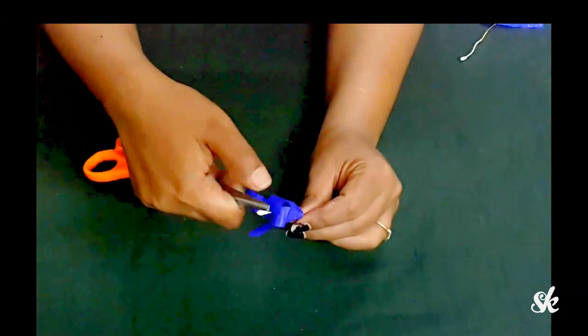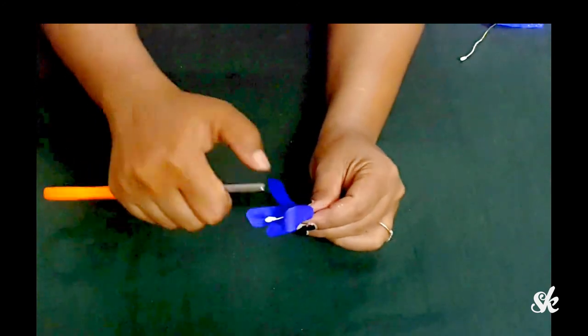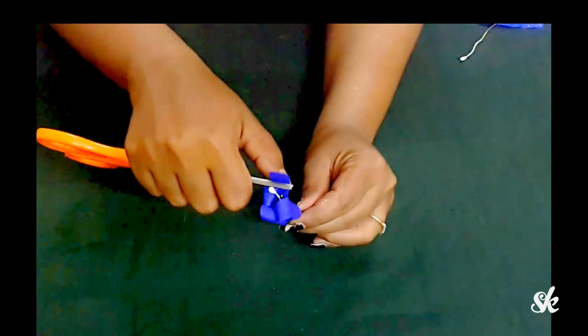For making a blooming flower, just one small change: curl up the petals inward. The rest of the steps are the same as for the bloomed flower.